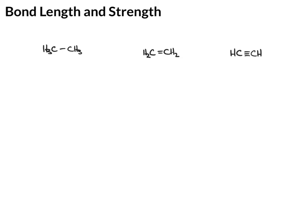Now if you go through and figure out the hybridization of each carbon involved in the bond, here we have sp3 carbons, here we have sp2 carbons, and here we have sp carbons.